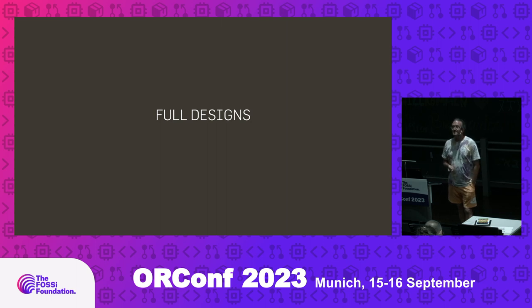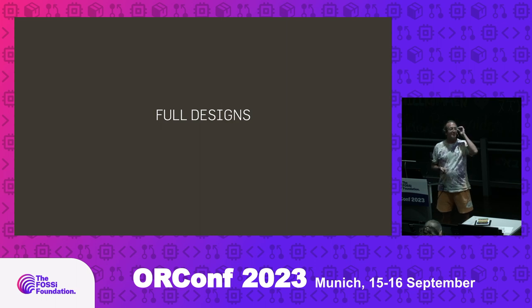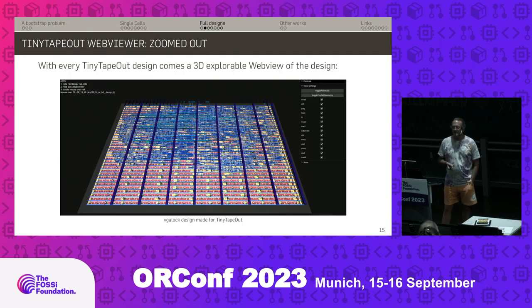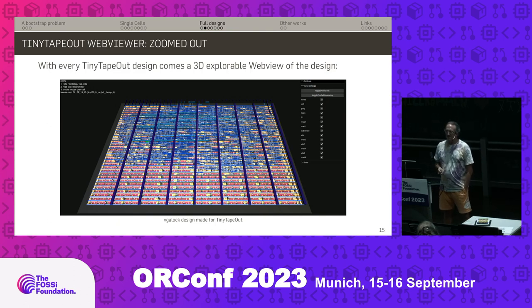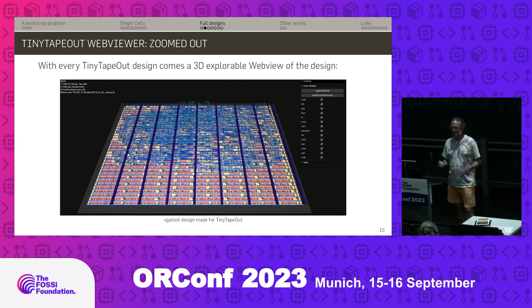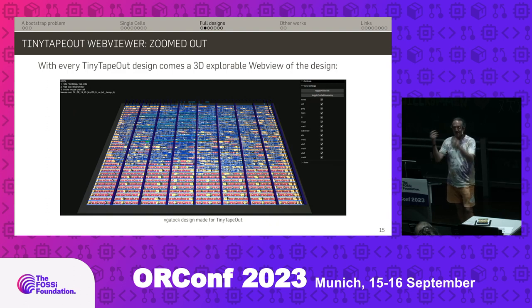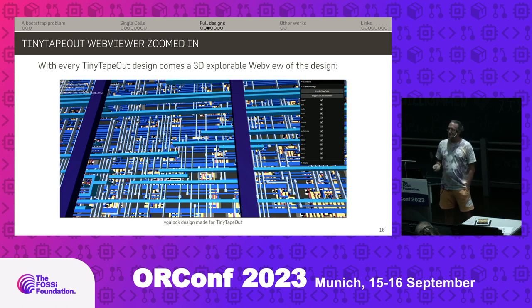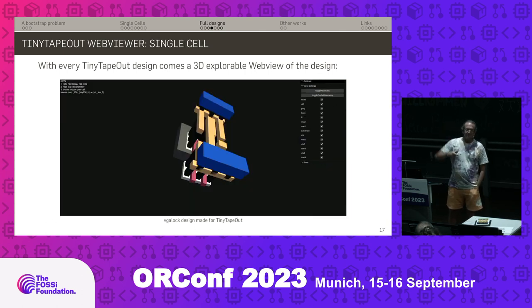For full designs, you take a full GDS of a microchip design and try to visualize it. The works now presented are not my works — just a collection of things other people have done. If you make a Tiny Tapeout design, in the process of making it, you get with every design an explorable web view of your design. It's the die space with a bunch of cells in it, explorable in your browser — zoomable, rotatable. You can zoom in to the cell level itself.